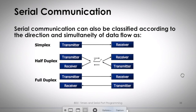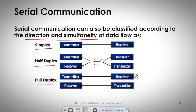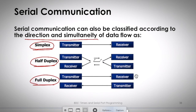Another classification of serial communication is based on direction and simultaneity — that is, whether communication can happen in both directions and simultaneously. Based on this, we have three modes: simplex, half duplex, and full duplex.